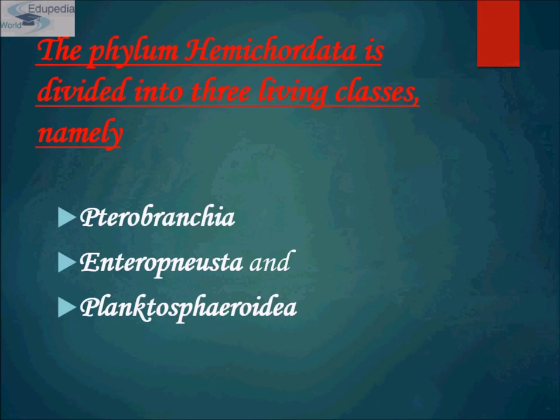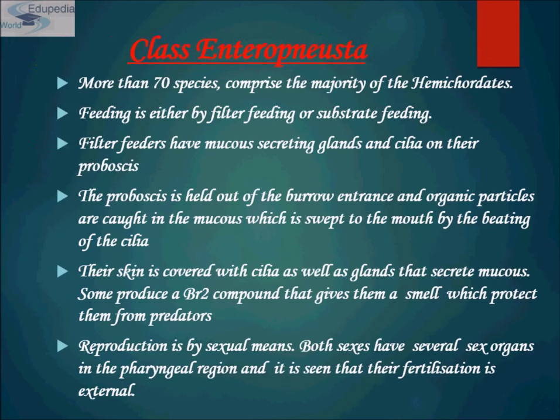The phylum Hemichordata is divided into three living classes: Pterobranchia, Enteropneusta, and Planctosphaeroidea, plus one extinct class. The first class, Enteropneusta, comprises more than 70 species — the majority of the hemichordata. They are typical aquatic worms.